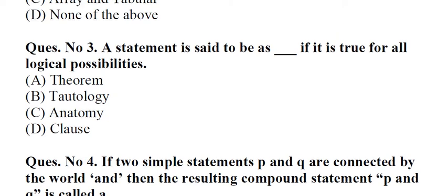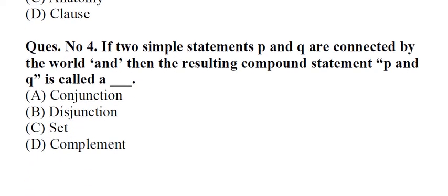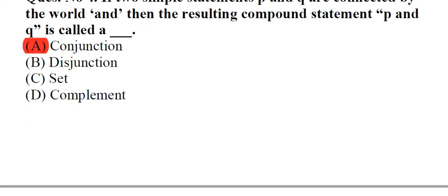Question number 3: A statement is said to be underscore if it is true for all logical possibilities. A. Theorem, B. Tautology, C. Anatomy, D. Clause. Answer: B, Tautology. Question number 4: If two simple statements P and Q are connected by the word 'and' then the resulting compound statement P and Q is called a underscore. A. Conjunction, B. Disjunction, C. Set, D. Complement. Answer: A, Conjunction.